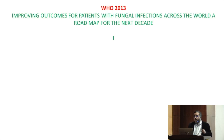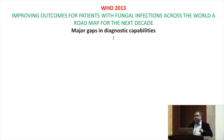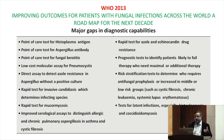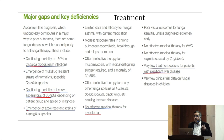The WHO started a campaign to improve outcomes for patients with fungal infections across the world and made a roadmap for the next decade. They identified major gaps in diagnostic challenges — lack of point-of-care testing methodology, lack of serological assessment, and laboratory-related gaps. There was also a lack of rapid tests for azole resistance, prognostic tests, and risk stratification tools. They also found a major gap in treatment — the required drugs were simply not available.